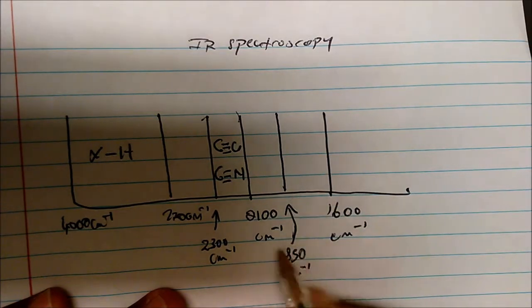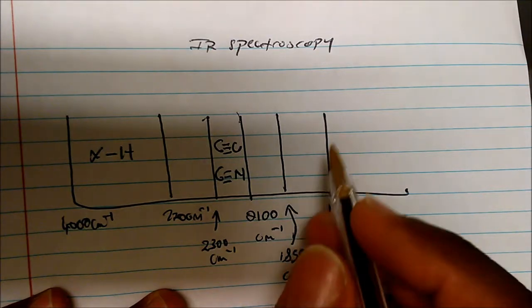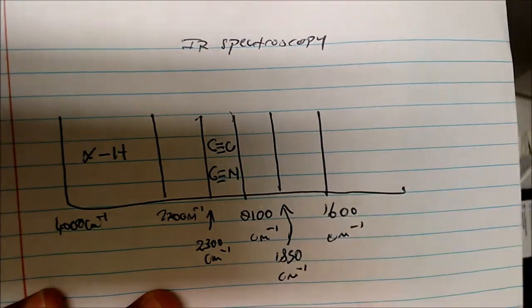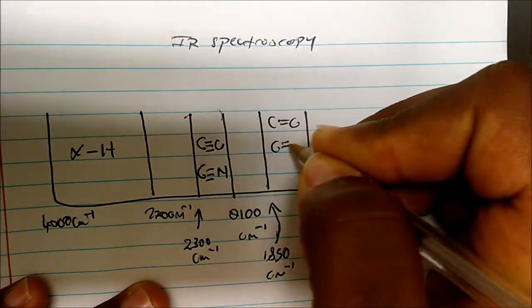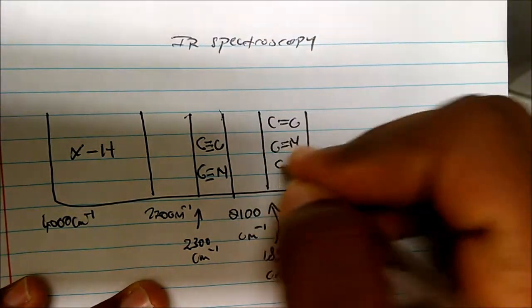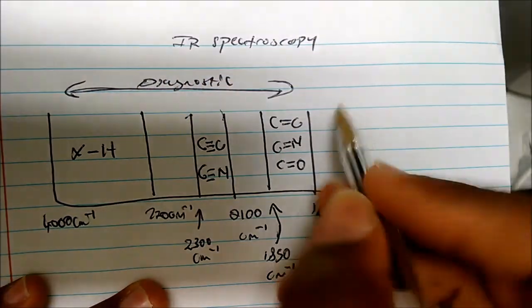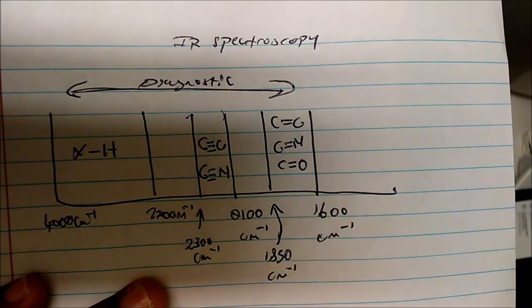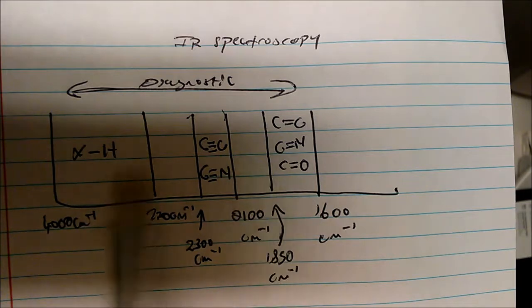Now between about 1850 centimeters inverse and 1600 centimeters inverse, you'll see carbon-carbon double bonds, carbon-nitrogen double bonds, and carbon-oxygen double bonds. Now anything below 1600 is called the fingerprint region, which just means that we don't really focus on what it says because above that region is where we identify the main functional groups.